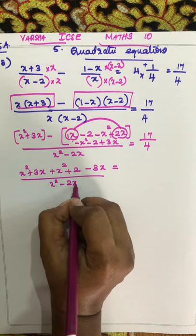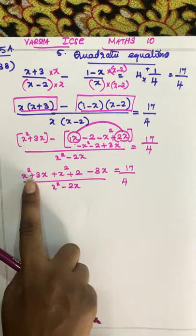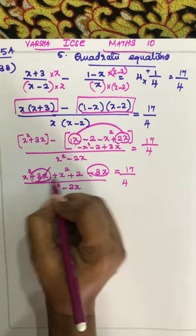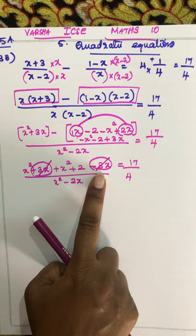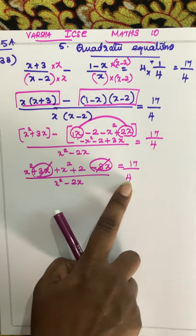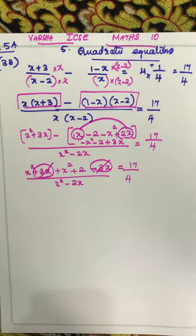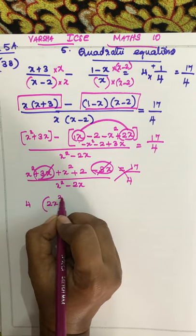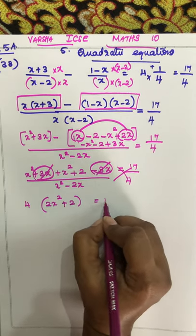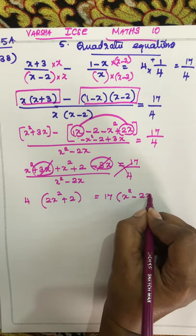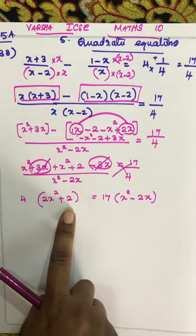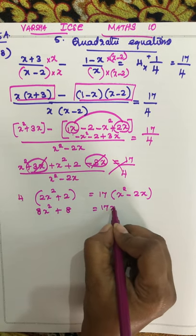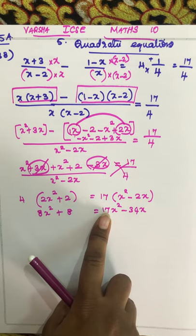Next step: we can do x squared minus 2x, equal to 17 by 4. Now in this step, you can simplify — the 3x and minus 3x cancel. With an equal sign, you can do cross multiplication. So: 4 into x squared plus 2 gives 4x squared plus 8, and this equals 17 into x squared minus 2x, which is 17x squared minus 34x. Since 17x squared is the bigger one, you can shift.